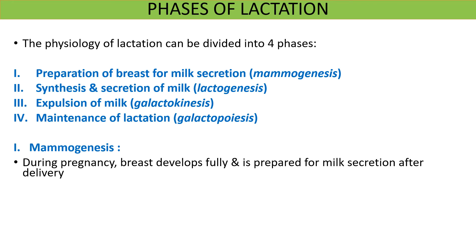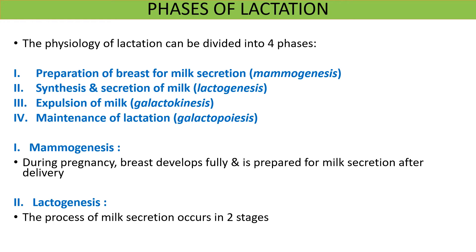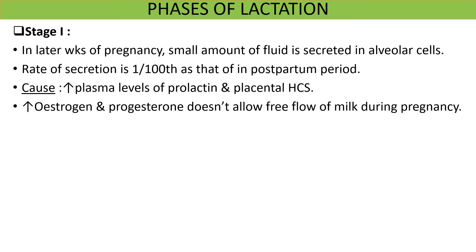Under mammogenesis, during pregnancy the breasts develop fully and are made ready for milk secretion after delivery. Lactogenesis occurs in two stages. In the first stage, during the later few weeks of pregnancy, a small amount of fluid is secreted in the alveolar cells. The rate of secretion is 1/100 of that of milk secretion in the postpartum period, so the amount is very small. This stage 1 secretion occurs due to high plasma levels of prolactin and the placental hormone HCS, that is human chorionic somatomammotropin. However, due to the suppressive action of estrogen and progesterone on lactation, free flow of milk never occurs during pregnancy.